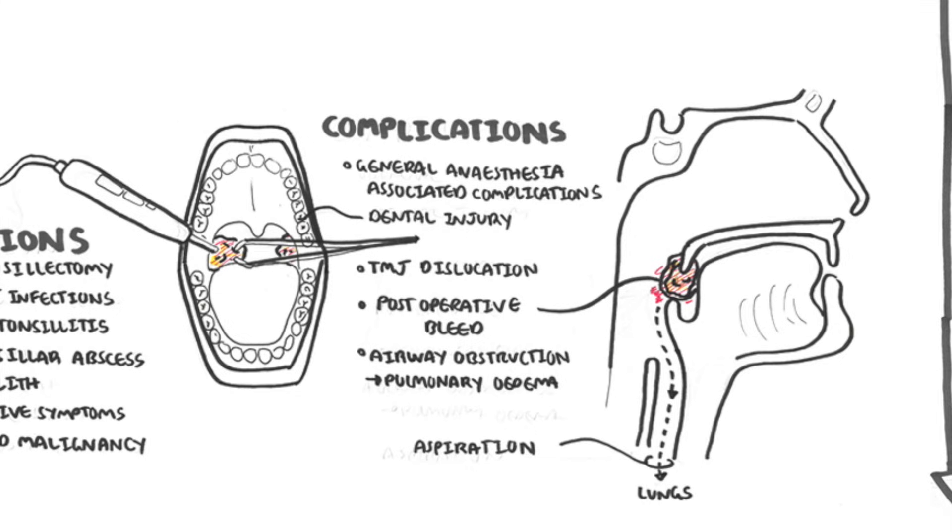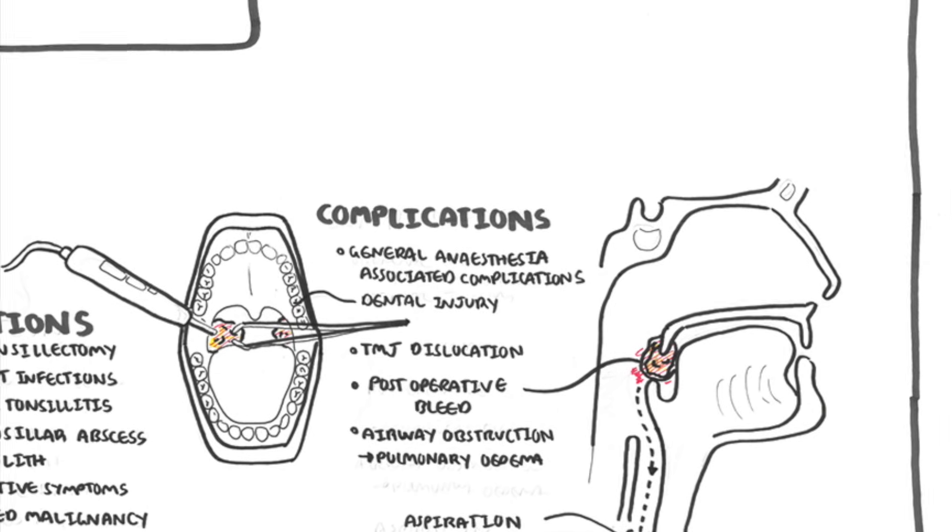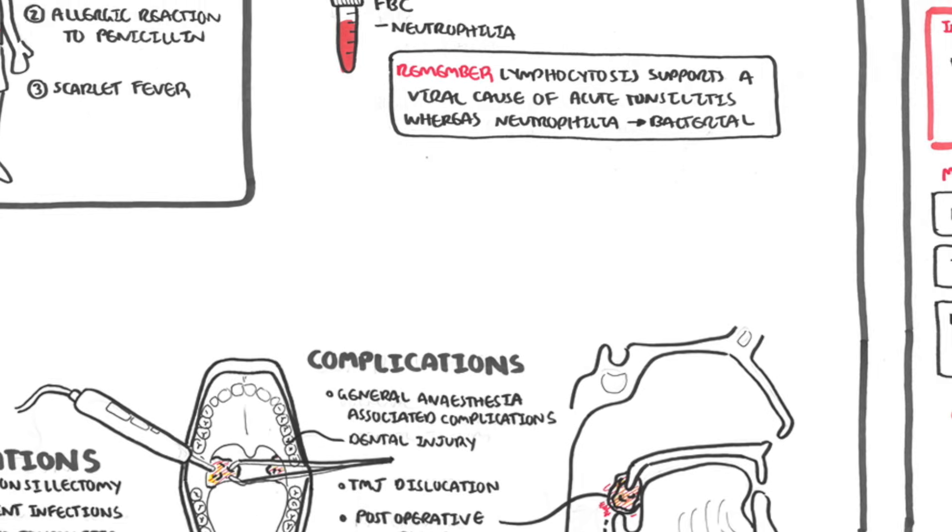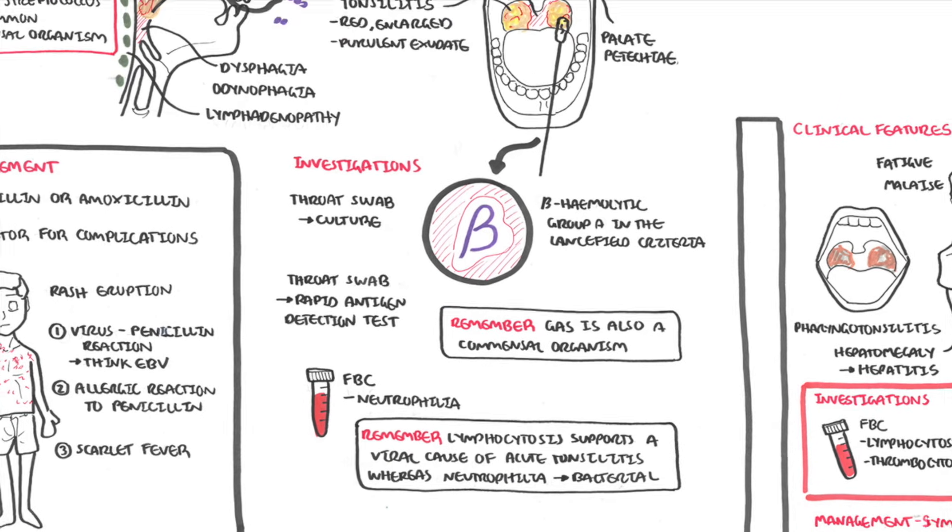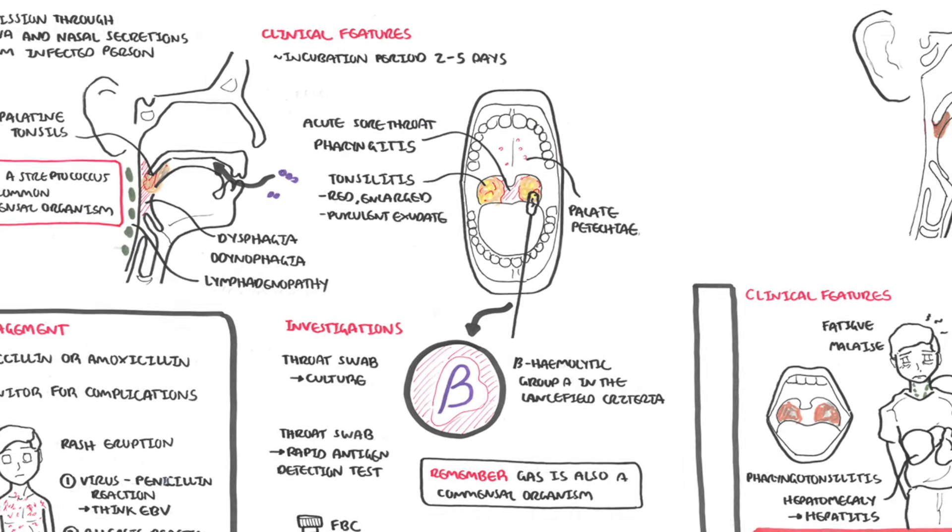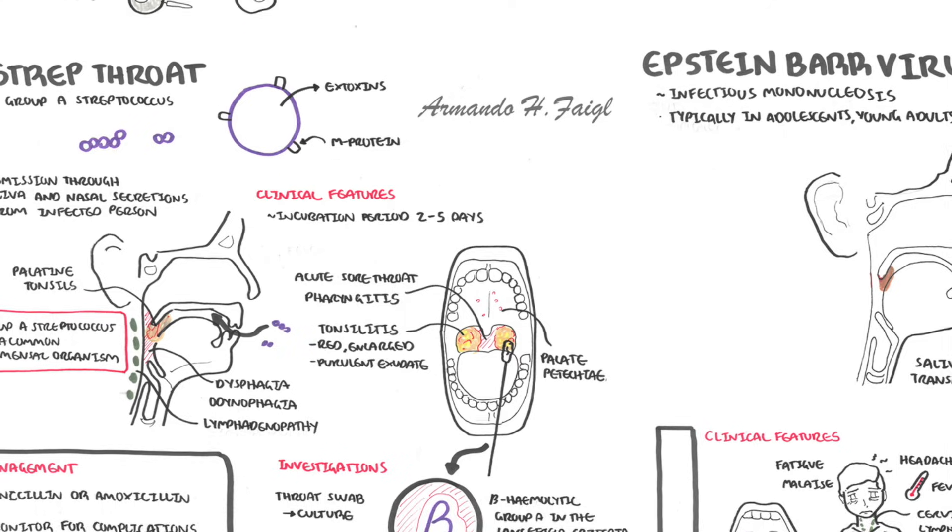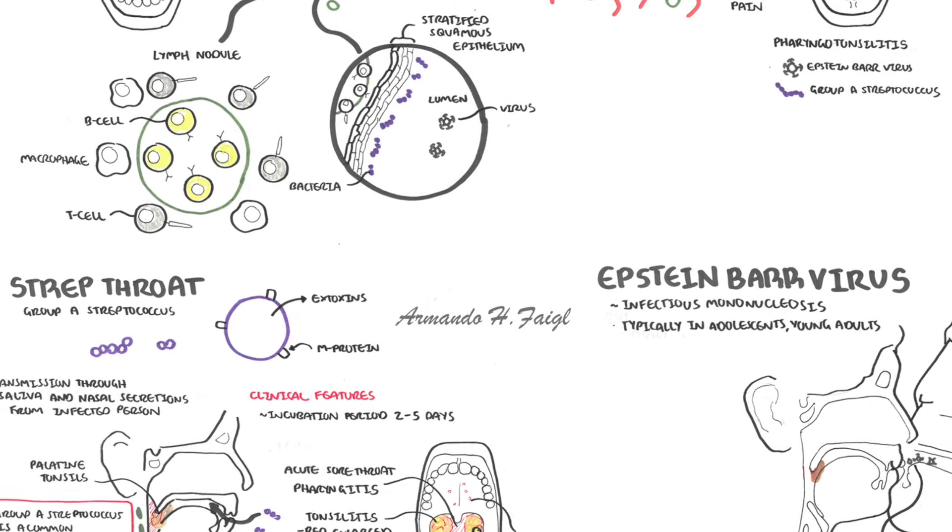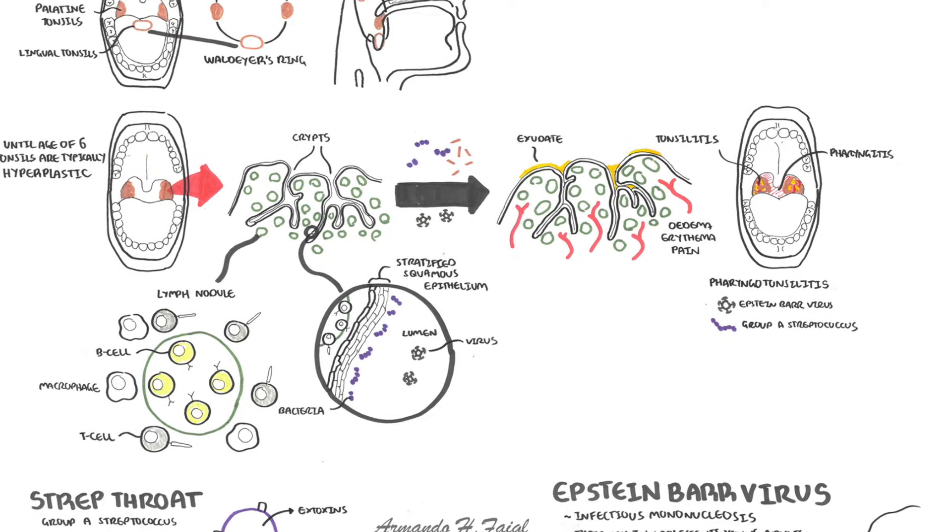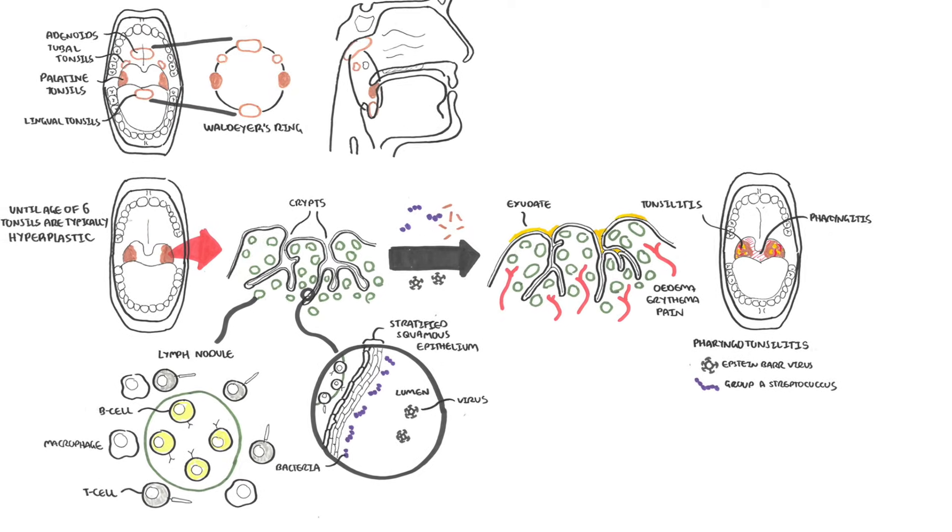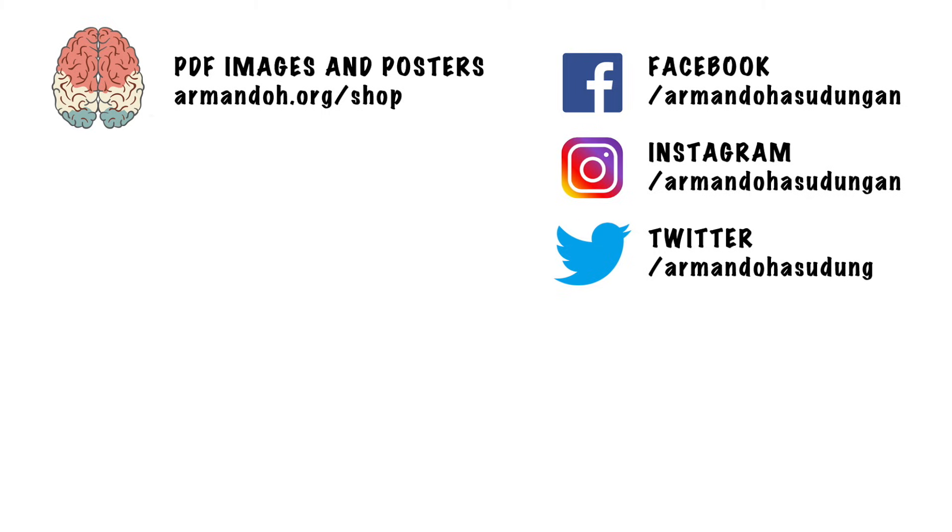So, in summary, acute tonsillitis is inflammation of the tonsils. The two most clinically important ones are tonsillitis caused by Epstein-Barr virus and group A streptococcus, but majority of acute tonsillitis are caused by viruses, just random viruses in general. Tonsillectomy is removal of the tonsils and has specific indications, but also keep in mind that there are complications associated with tonsillectomy. Thank you for watching, I hope you enjoyed this video.